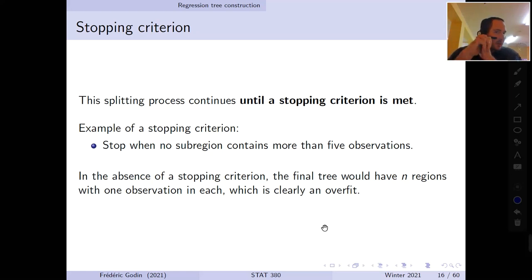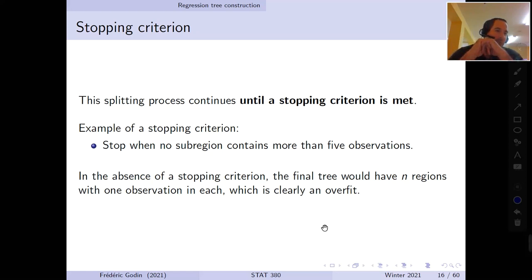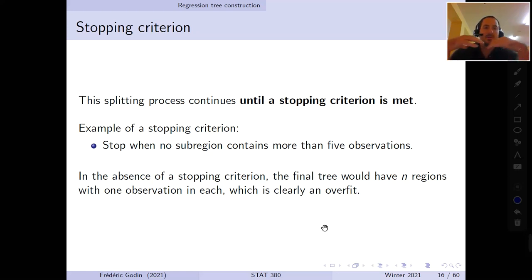A stopping criterion is necessary because if we continued splitting forever, eventually the tree would have exactly n sub-regions — as many as observations. Each sub-region would contain exactly one observation, and the prediction would exactly equal that observation's response, giving zero training error, which is clearly overfitting. We want at least a few observations in each sub-region when the model is trained, so an early stopping criterion is necessary.